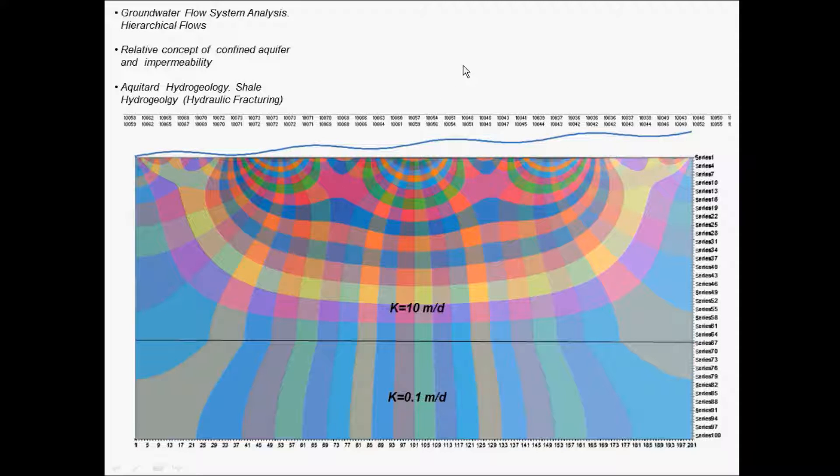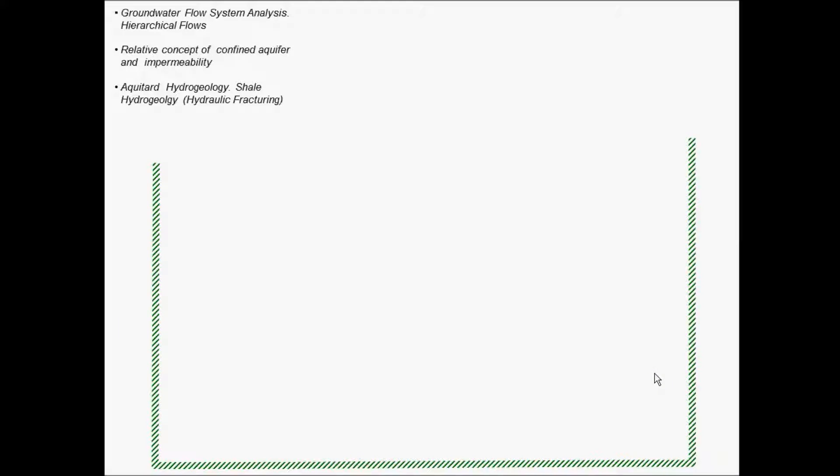This is the final part of the groundwater flow system analysis. We make use of the advantage of a spreadsheet as a simple tool and the advantage of numerical methods to include this kind of heterogeneity. Let's continue with some other features.